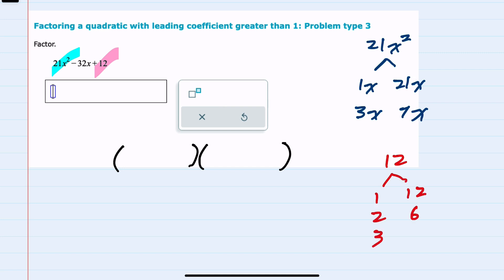or 3 and 4. It's important to notice that since that last term is positive, the signs have to be the same. But our middle term is negative, so this would either need to be negative 1 and negative 12, negative 2 and negative 6, or negative 3 and negative 4.